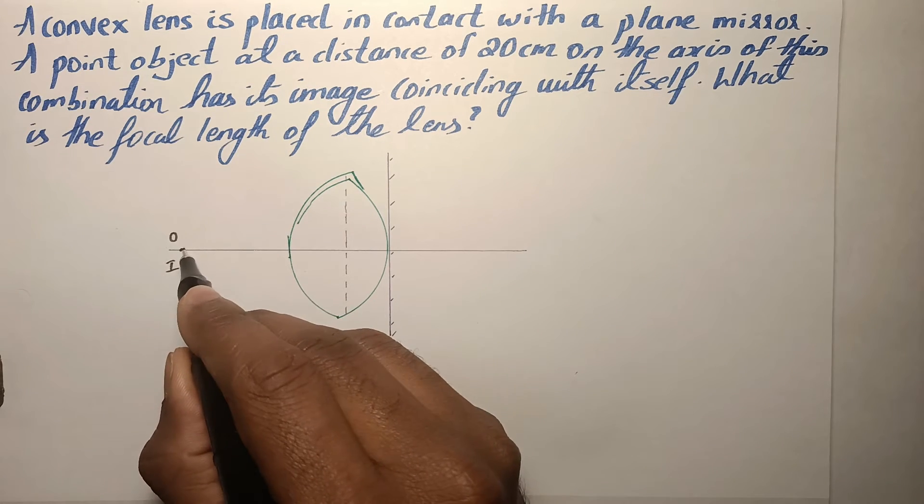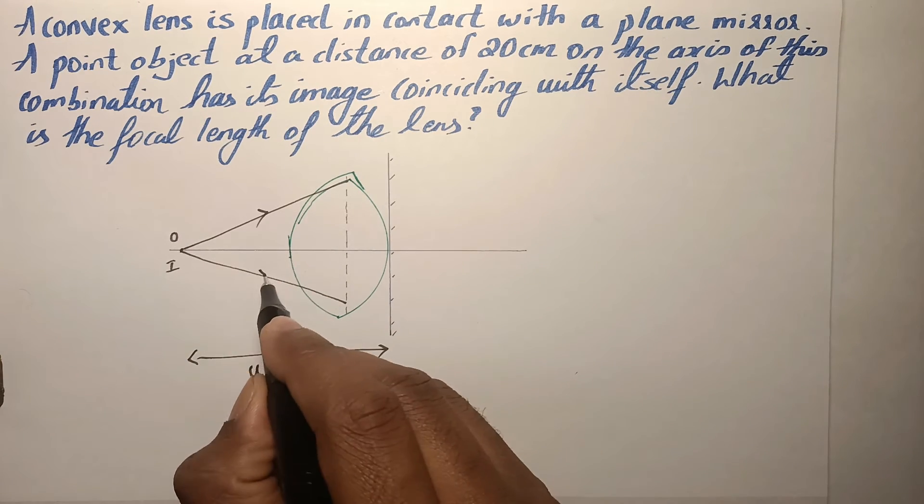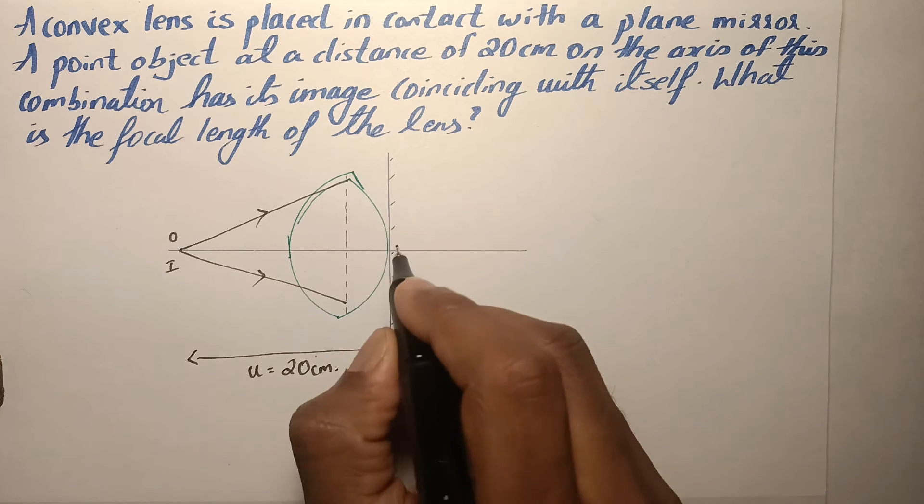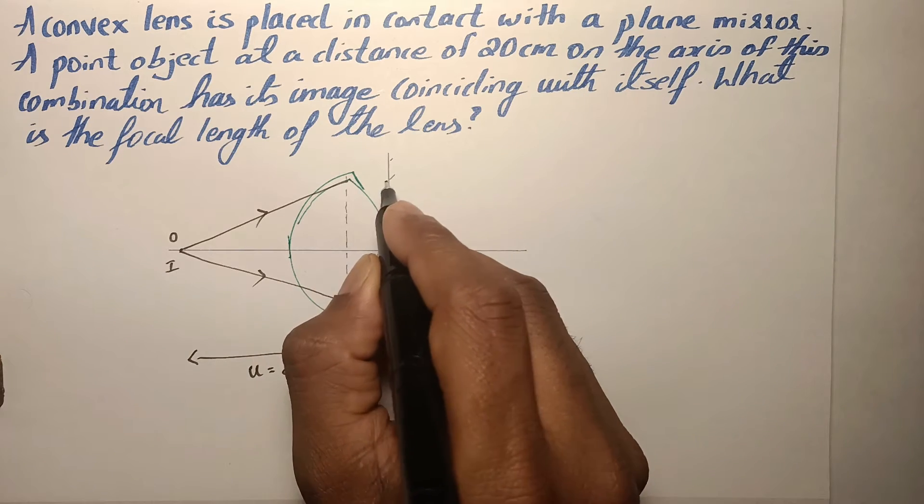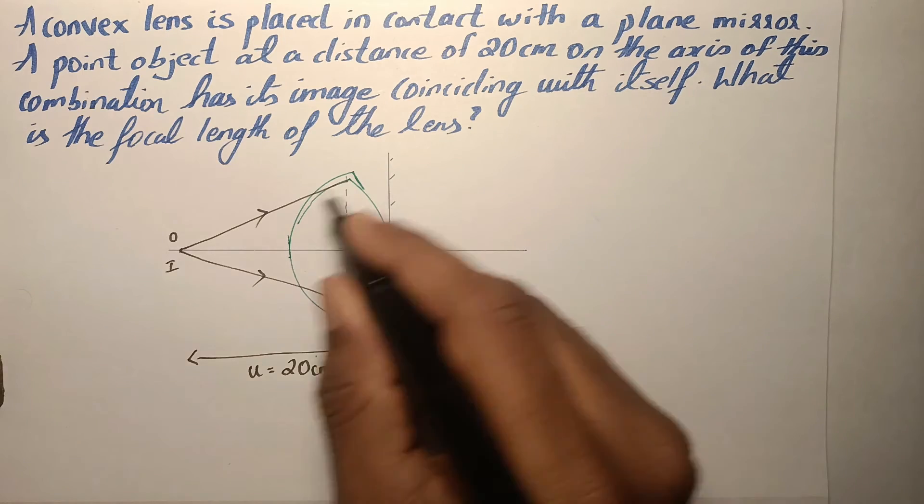From a point object, the light ray falls on the convex lens and it gets refracted. And the refracted ray goes into the mirror and gets reflected back.